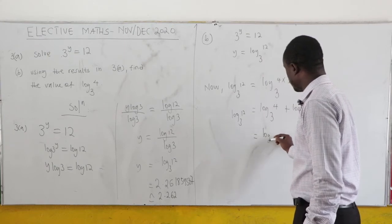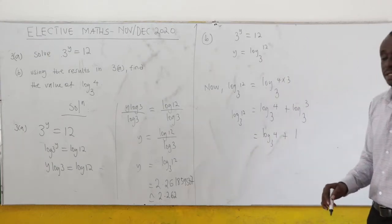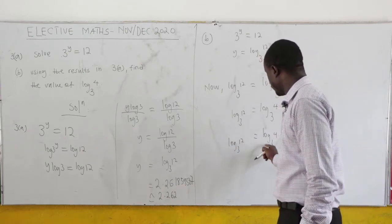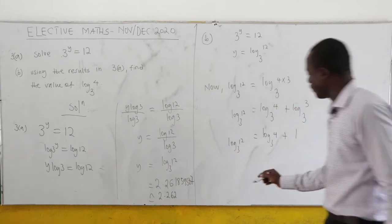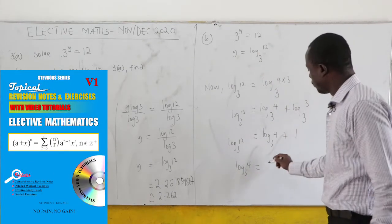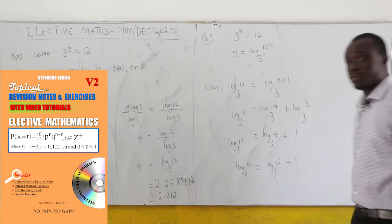Now, so you have log₃4 plus log₃3. This is just 1 equals log₃12. We want to find log₃4. So this has to move here. So our log₃4 will be log₃12 minus 1.